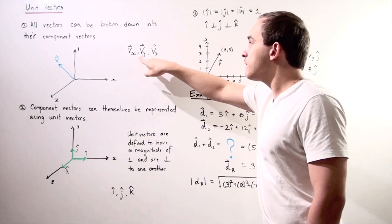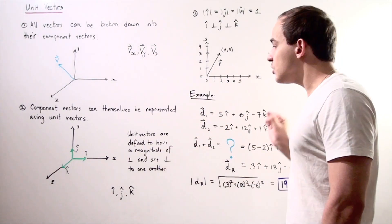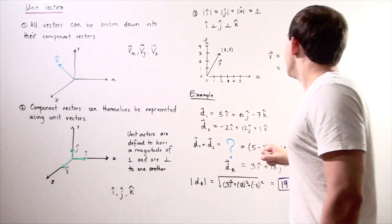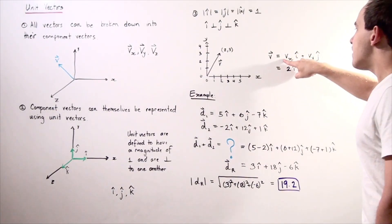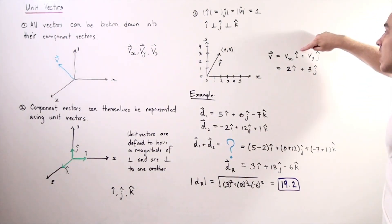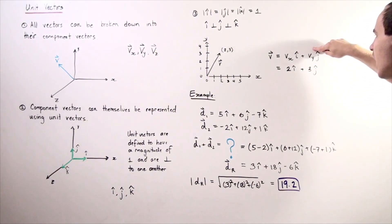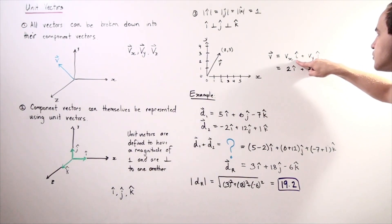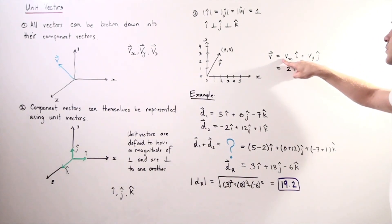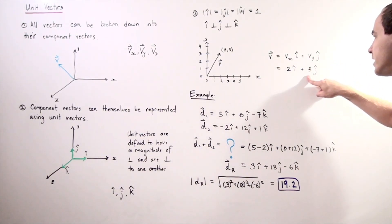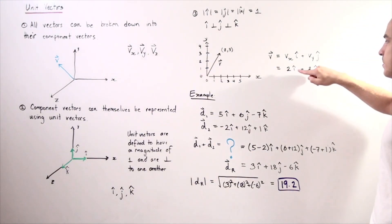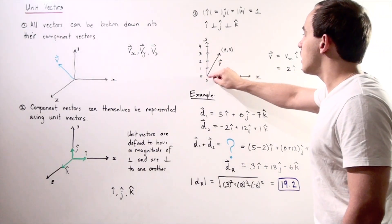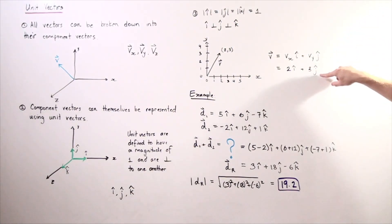Now, what about directions? Both Vx and Vy have directions, and that's exactly where our unit vectors come into play. We represent vector v using unit vectors and component vectors as follows: v equals the Vx component, which points along the i-direction (the x-axis), plus the Vy component, which points along the j-direction (the y-axis). Since our magnitude of Vx is 2 and the magnitude of Vy is 3, our vector is written as 2 times i-hat plus 3 times j-hat.